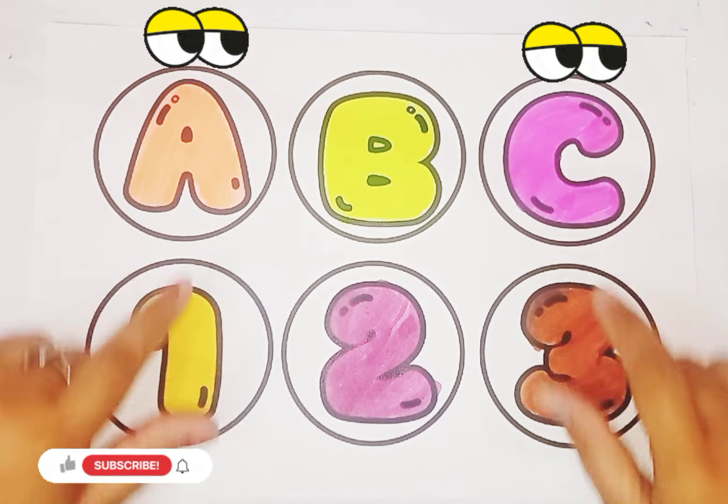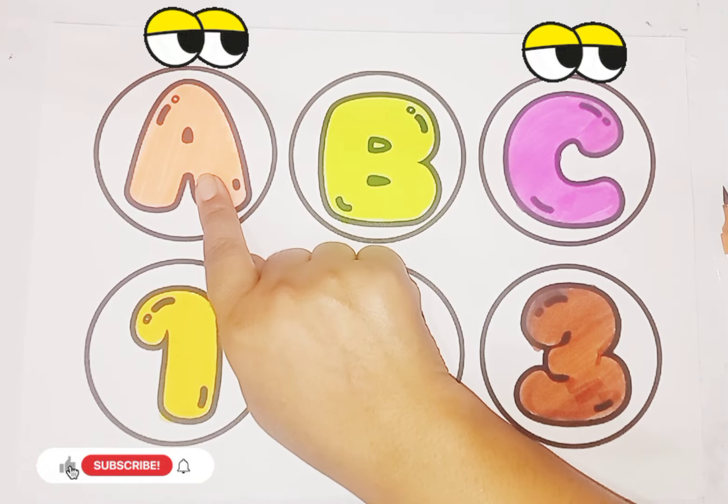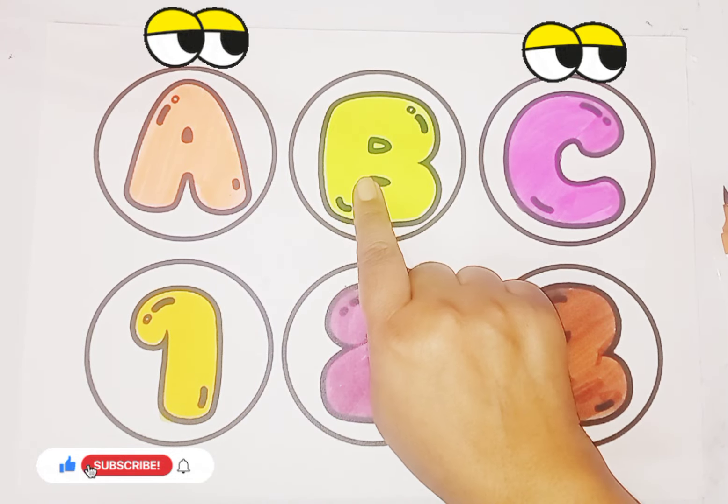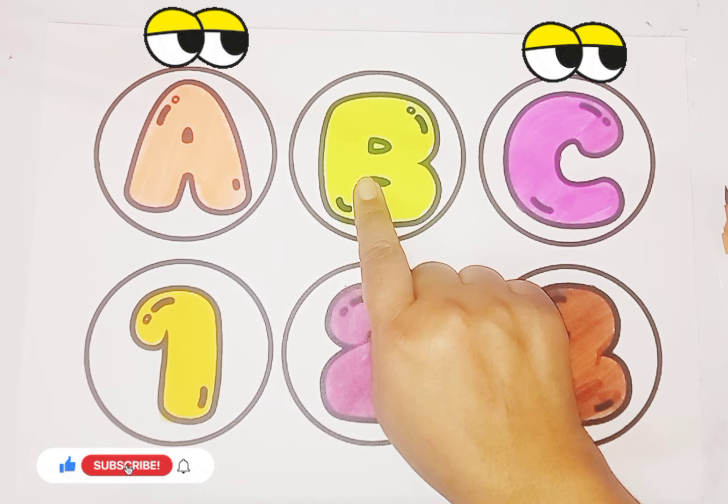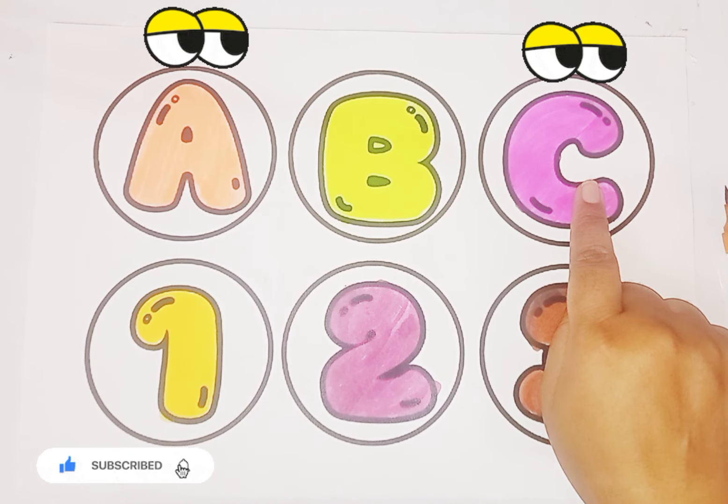So kids, today we learn alphabets and numbers. Alphabet A, A for apple, A for aunt. B, B for banana, B for boy. C, C for cat, C for camel.